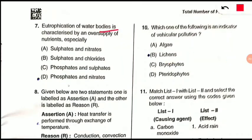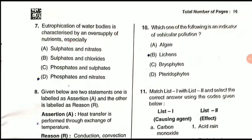Question 7: Eutrophication of water bodies is characterized by an oversupply of nutrients — especially which nutrients? Eutrophication involves the addition or oversupply of mostly phosphates and nitrates. This is also a frequently asked exam question; your concept should be clear.